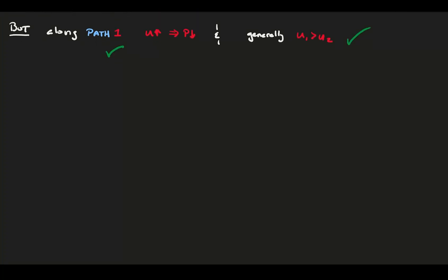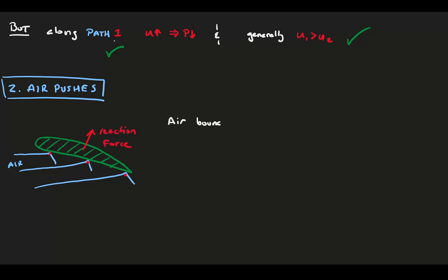OK, so now we know equal time is a flawed argument. The second common erroneous explanation is that air pushes on the foil from the bottom. Here, a foil is placed at an angle of attack in the flow. The idea here is that the airflow bashes into the underside of the foil and bounces off. In order to absorb the flow redirection, there's a reaction force on the foil that results in lift.